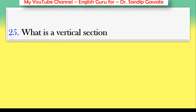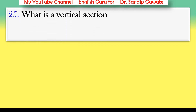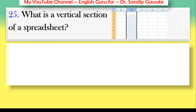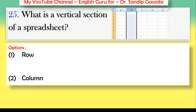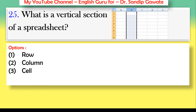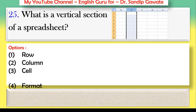Question 25: What is the vertical section in a spreadsheet? Referring to the image shown — the highlighted section B1 is dark. Options: row, column, cell, or format. The correct answer is option number two — it is called a column.